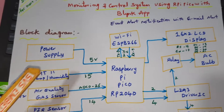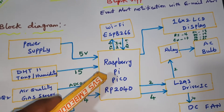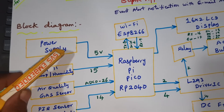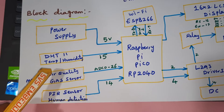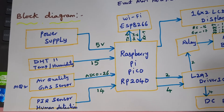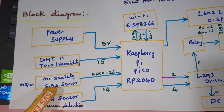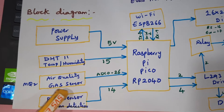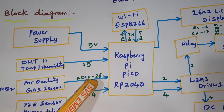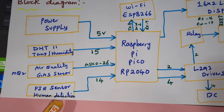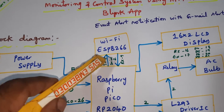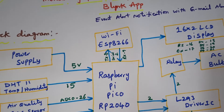Let us go into the block diagram. We are using Raspberry Pi Pico with the RP2040 board and a 5-volt power supply module. The DHT11 temperature and humidity sensor is connected to GPIO pin 15. The air quality gas sensor is connected to ADC channel 0, pin 26. The PIR sensor is connected to GPIO pin 14. We are using an external Wi-Fi module.